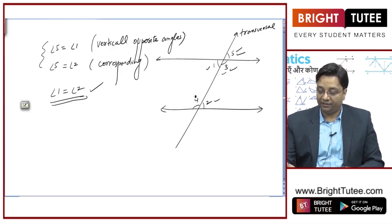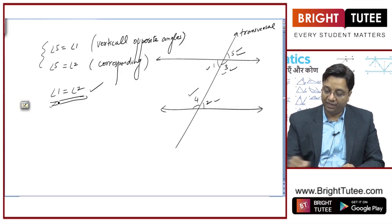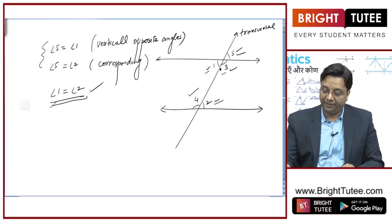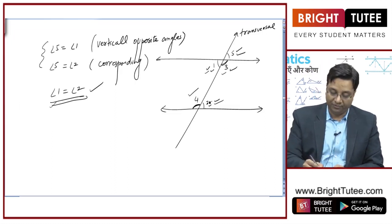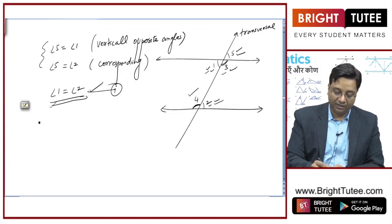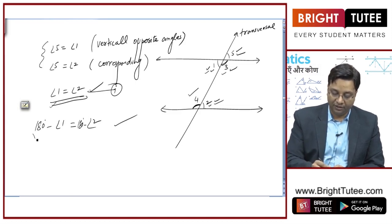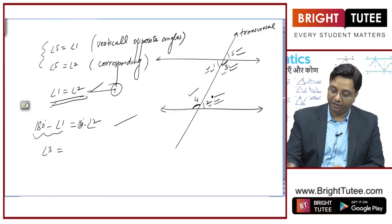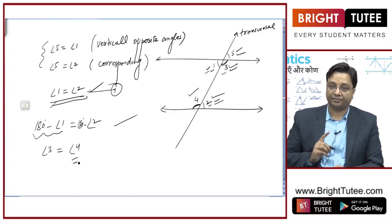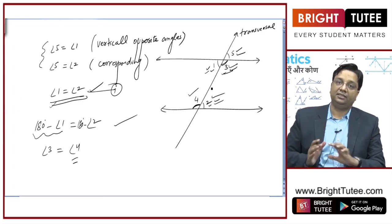Similarly, we can prove angle 3 is equal to angle 4. Since angle 1 equals angle 2, angle 3 is supplementary to angle 1 and angle 4 is supplementary to angle 2. If angle 1 equals angle 2, their supplementary angles are also equal. So 180 minus angle 1 is angle 3, and 180 minus angle 2 is angle 4. Hence, each pair of alternate interior angles is equal.